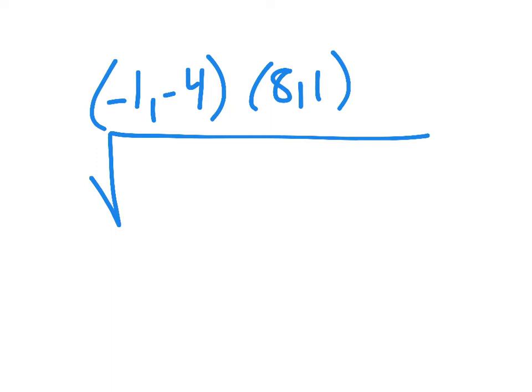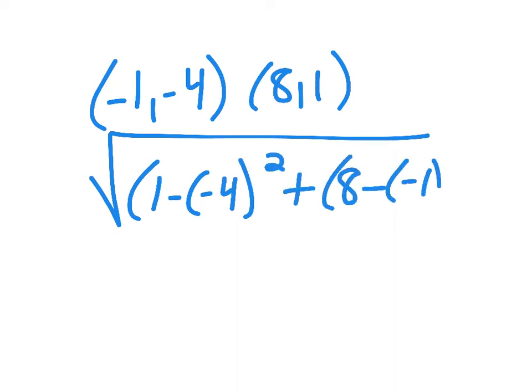So I can just use the distance formula, which says y minus y, so 1 take away negative 4, I'll square it, plus subtract your x coordinates, and then square them, and then finally add them together and square root.